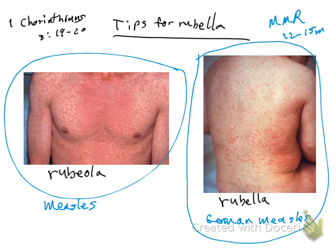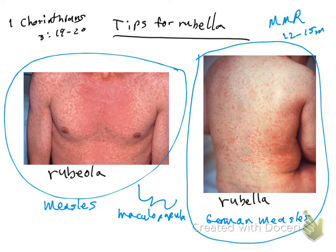Now, both rubiola and rubella share a characteristic: a maculopapular rash. This rash begins on the face of the patient and then spreads to the trunk and extremities.